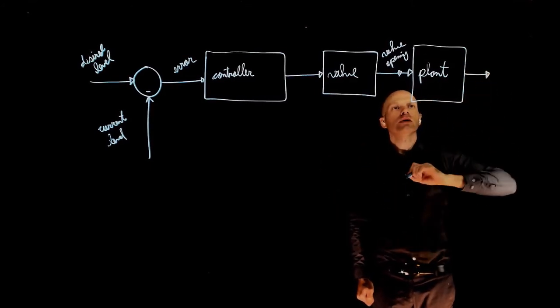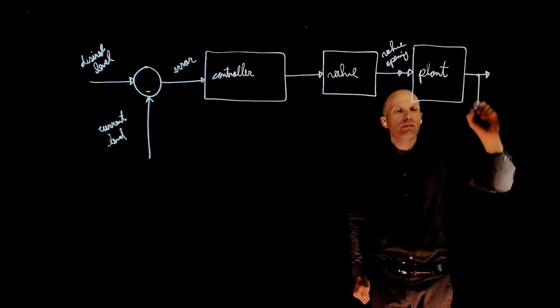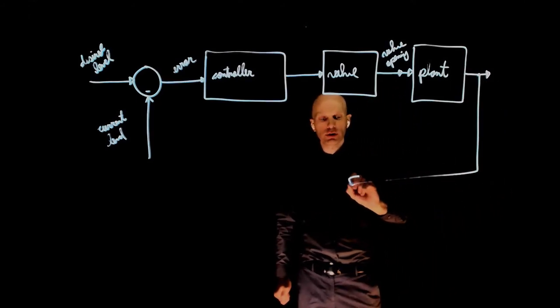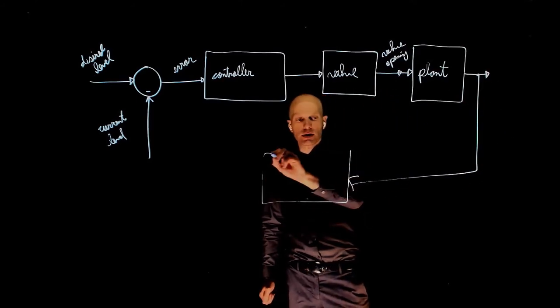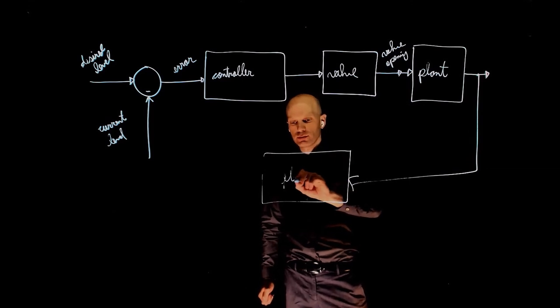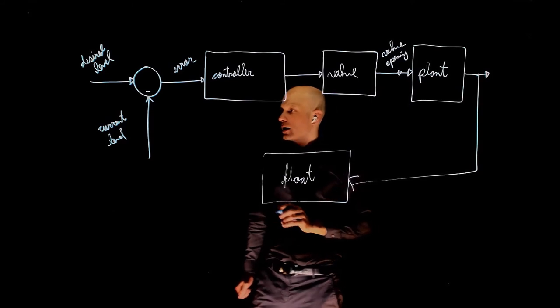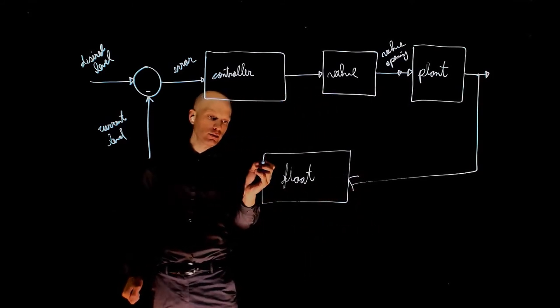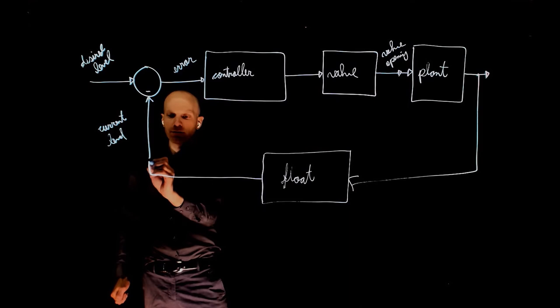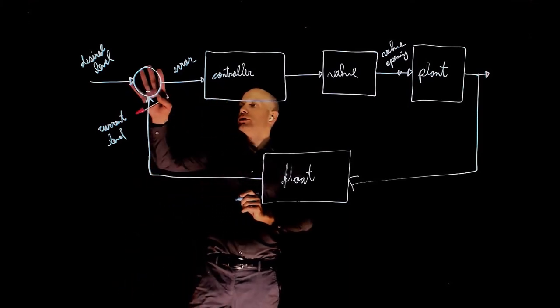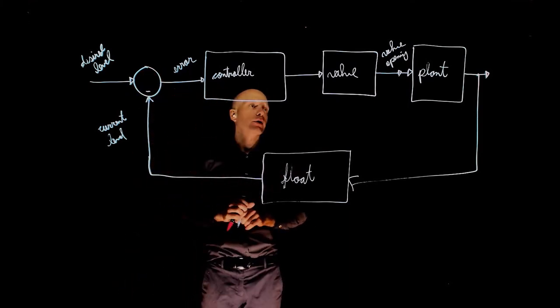The output here is the water level. We are going to measure that with a float. This is our sensor. And the current level now is what we need in this comparator here to determine the error.